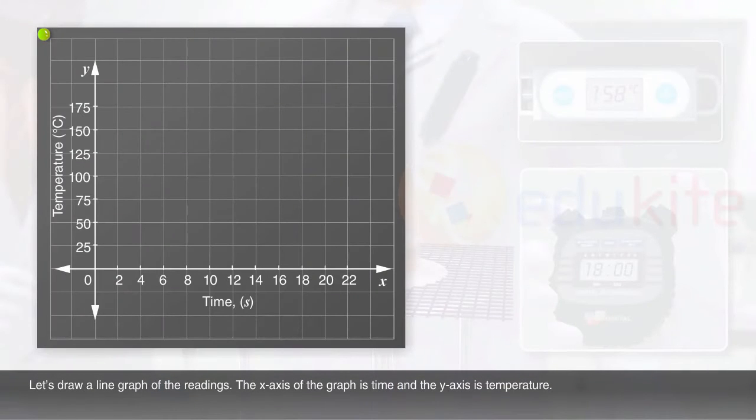Let's draw a line graph of the readings. The x-axis of the graph is time and the y-axis is temperature.